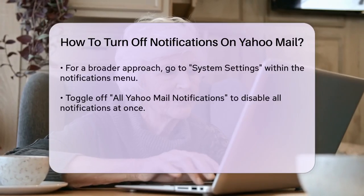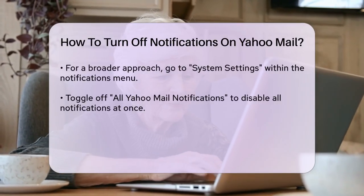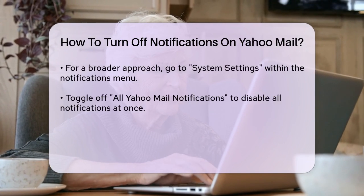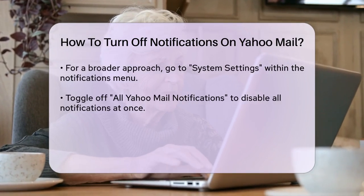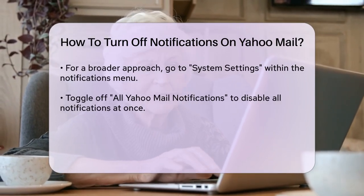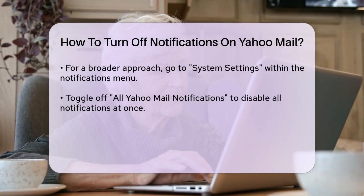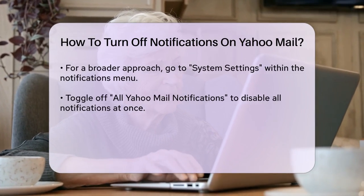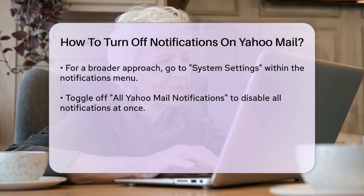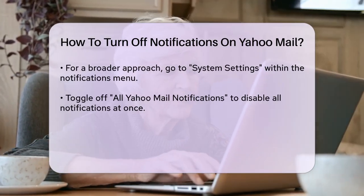For a more comprehensive approach, you can also go into the system settings within the notifications menu. Here, you can toggle off all Yahoo Mail notifications at once. Just click on System Settings, and then toggle off the All Yahoo Mail Notifications option.